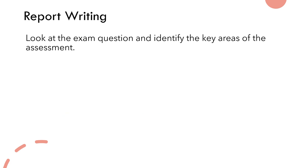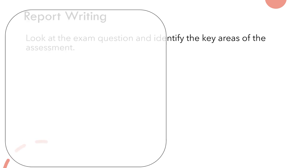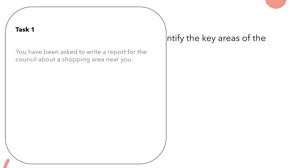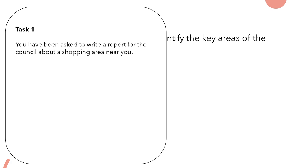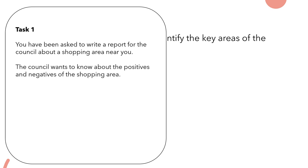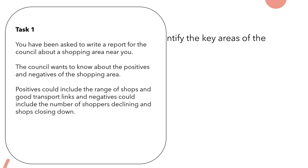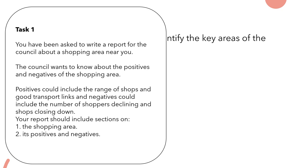Look at the exam question and identify the key areas of the assessment. This is one we're going to focus on in terms of producing our own report. Task one: you've been asked to write a report for the council about a shopping area near you. The council wants to know about the positives and negatives of the shopping area. Positives could include the range of shops and good transport links; negatives could include the number of shoppers declining and shops closing down. Your report should include sections on the shopping area, its positives and negatives, and the changes you would recommend.